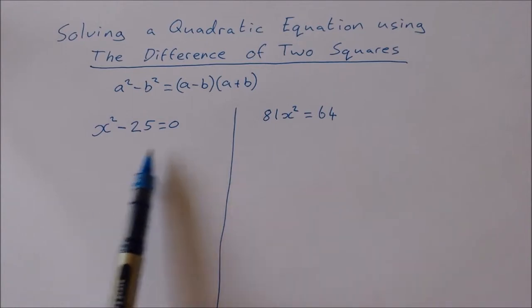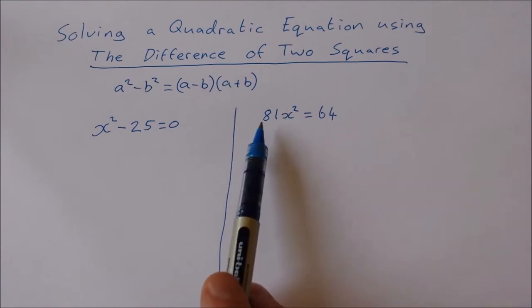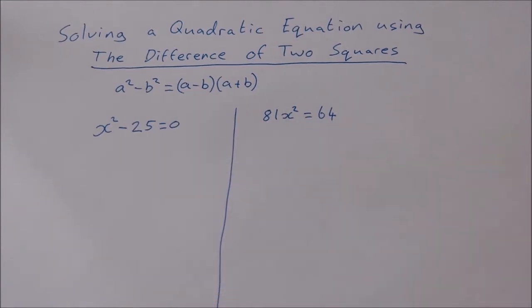I'm going to show you two examples in this video. I'm going to show you x² minus 25 equals 0, and 81x² equals 64.